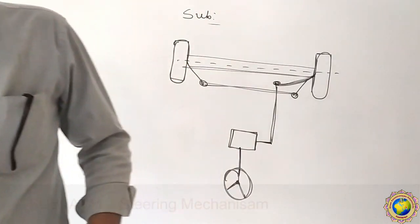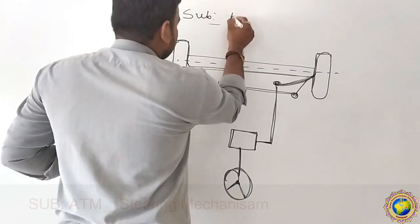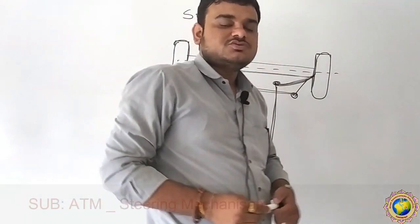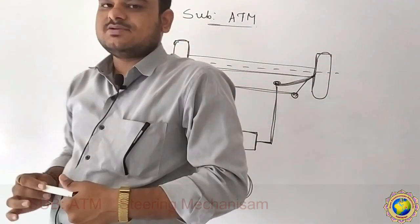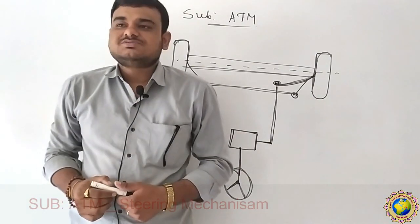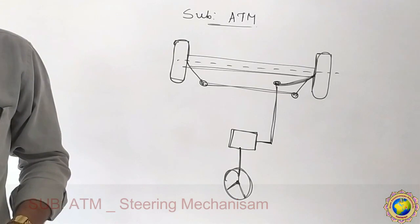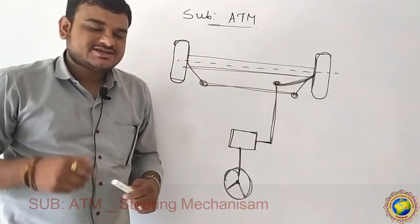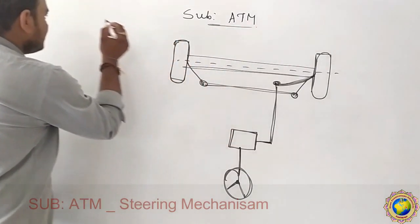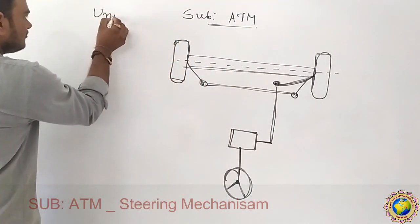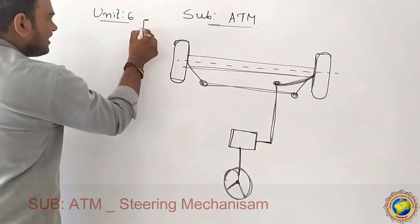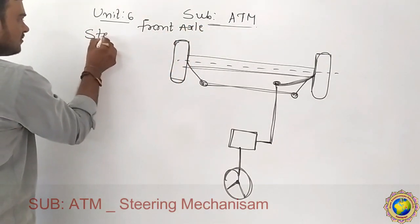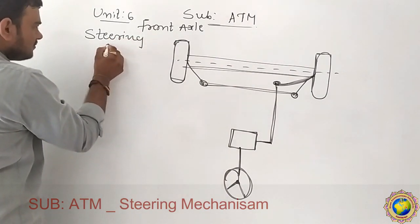Good morning students. Subject: Automobile Transmission Mechanism. In this subject, last time in the previous lecture we were discussing about the rear axle assembly. We completed Unit Number 5, Rear Axle Assembly. Today we are going to start the next new unit — Unit Number 6: Front Axle and Steering Mechanism.